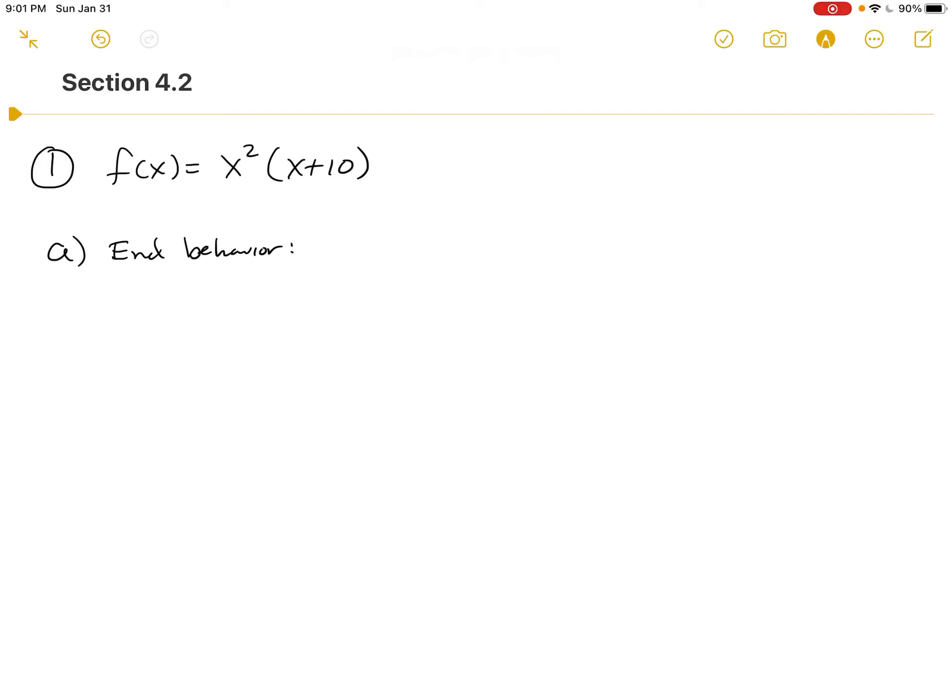And so they're looking for that power function. We're just going to look at this and realize the biggest thing happening in the first part is x squared. The biggest thing happening in the second part is x. And x squared times x is x cubed. So that's its end behavior.